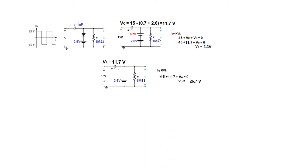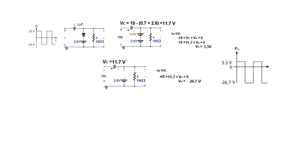During the negative half, the diode is reverse biased and open circuit, but the capacitor remains charged at 11.7 volts. Applying KVL: plus 15 plus 11.7 plus V0 equals 0, so V0 is minus 26.7 volts. Therefore, at the positive half the output is 3.3 volts, and during the negative half the output is minus 26.7 volts. I hope this gives you a better understanding. Thank you.